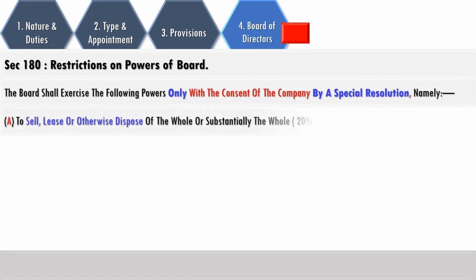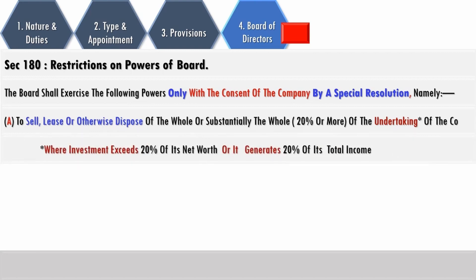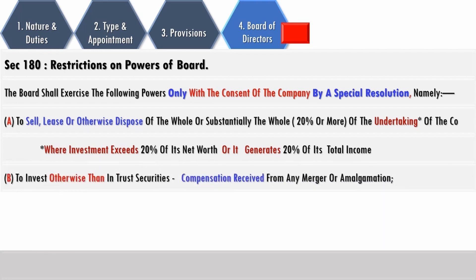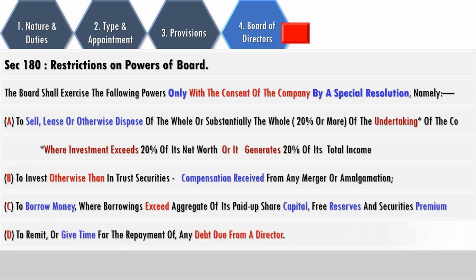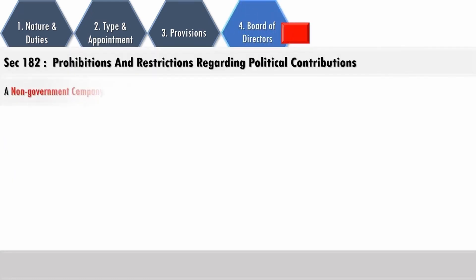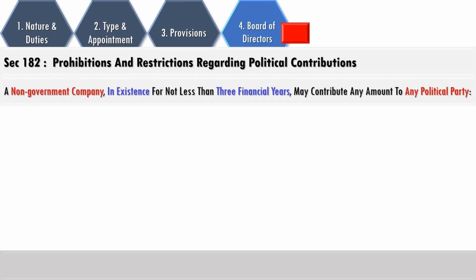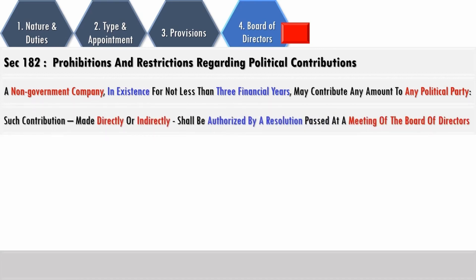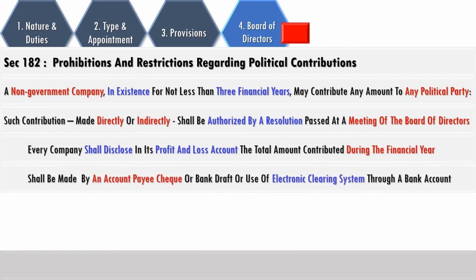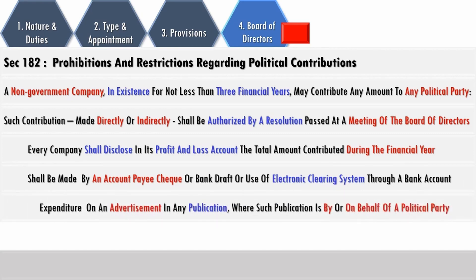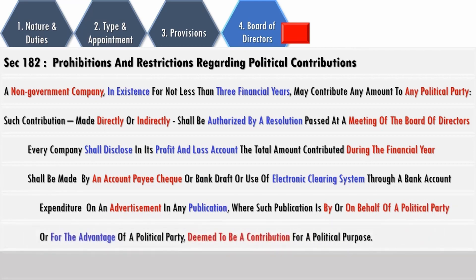There are four specific powers which the board can exercise only subject to the consent of the company by a special resolution: to sell, lease, or otherwise dispose of the whole or substantially the whole of the undertaking of the company (an undertaking wherein investment exceeds 20% of its net worth or generates 20% of its income); to invest otherwise than in interest securities, compensation received from any merger or amalgamation; to borrow money where borrowings exceed the aggregate of its paid-up share capital, free reserves, and securities premium; and to remit or give time for repayment of any debt due from a director. A non-government company in existence for not less than three financial years may contribute any amount to any political party — directly or indirectly — authorized by a board resolution. Every company shall disclose the total amount contributed during the financial year in its profit and loss account, made by account-payee cheque, bank draft, or electronic clearing system. Expenditure on advertisement in any publication by or on behalf of a political party or for its advantage shall be deemed to be a contribution for a political purpose.